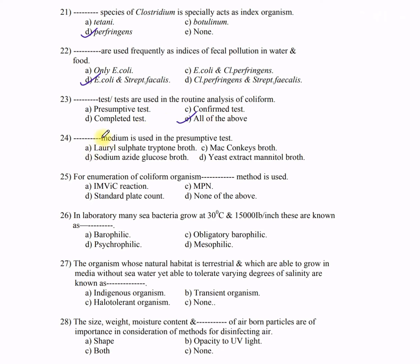Question 24: Dash medium is used in the presumptive test — A) lauryl sulfate tryptone broth, B) MacConkey broth, C) sodium azide glucose broth, D) yeast extract mannitol broth. The correct answer is MacConkey broth. Question 25: For enumeration of coliform organisms, dash method is used — A) invict reaction, B) MPN, C) standard plate count, D) none. The correct answer is MPN, which stands for Most Probable Number.